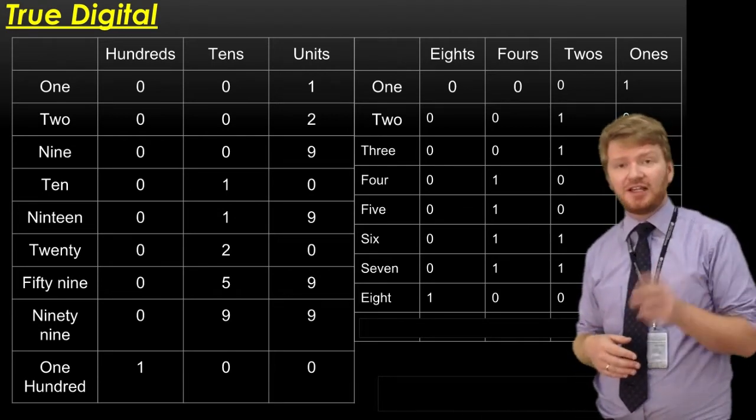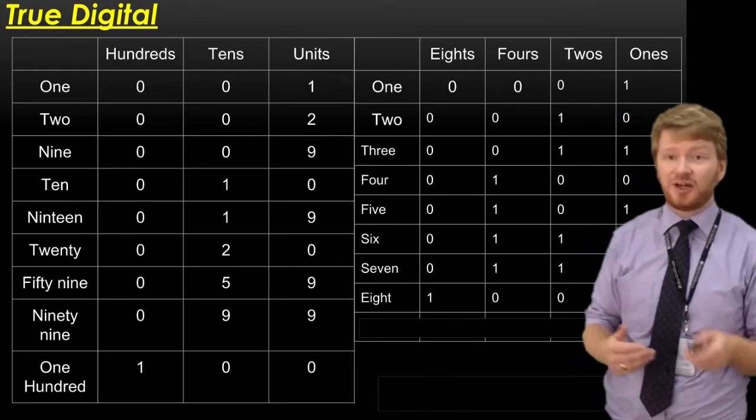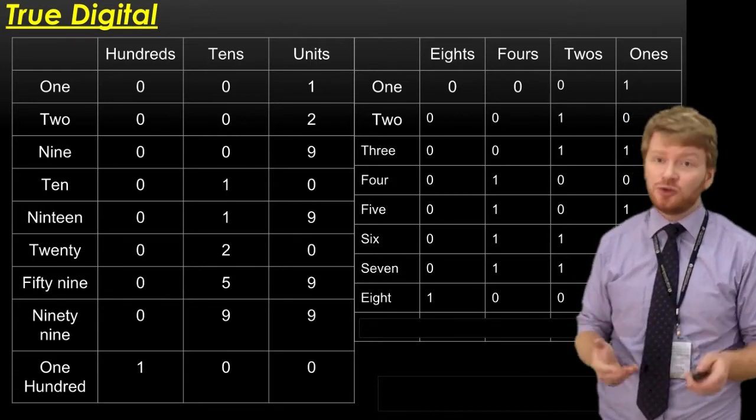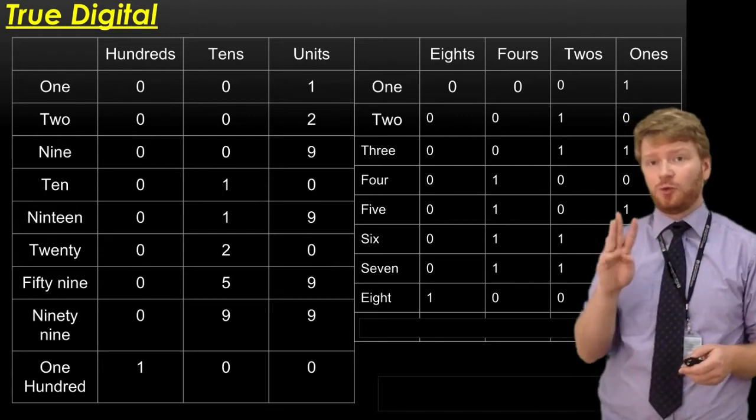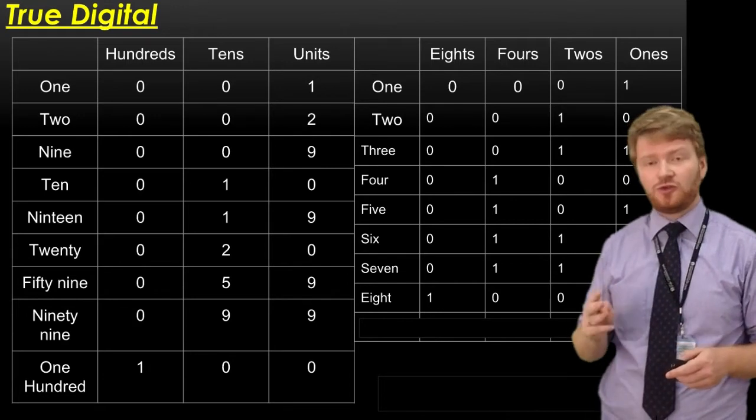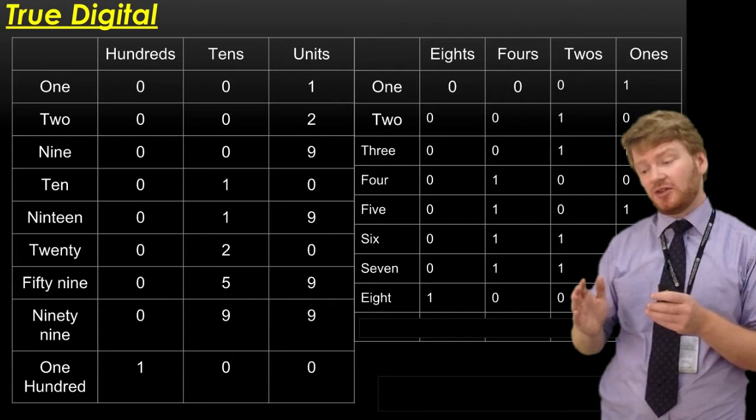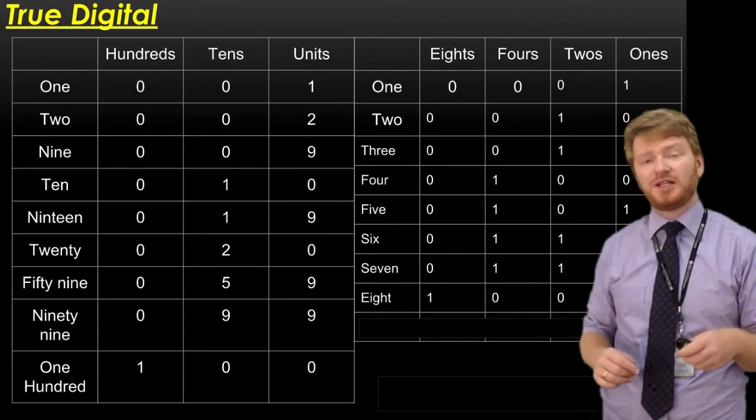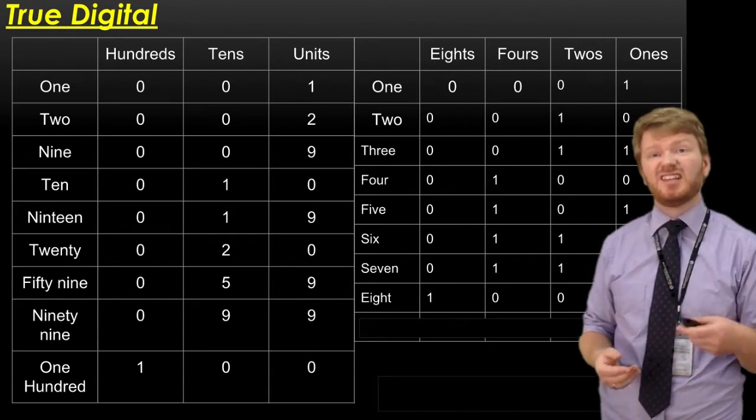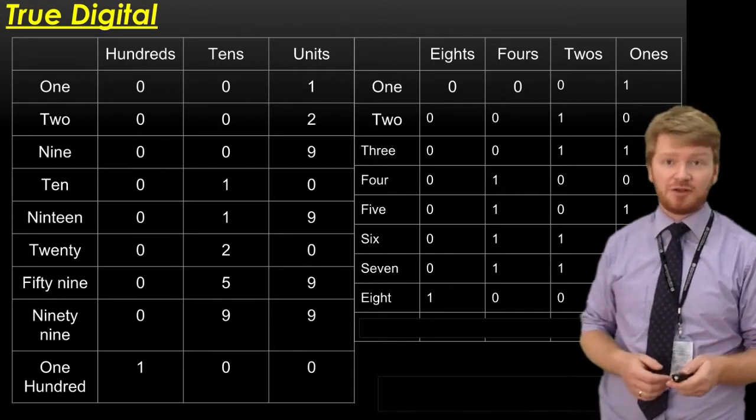So I can have an 8s column, a 4s column, a 2s column, and a 1s column. It's exactly the same as our number system, but instead of having hundreds, tens, and units, I have 8s, 4s, and 2s. On your course you only have to go up to a 4-bit number, meaning you'll have 8s, 4s, 2s, and 1s. The biggest bit, the leftmost bit, is called the most significant bit (MSB). The rightmost one is the least significant bit (LSB).